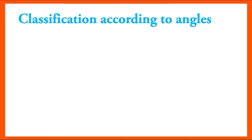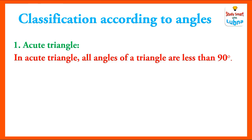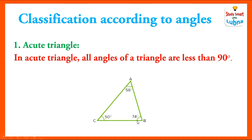Now classification of triangles according to their angles. Number one is acute triangle. In an acute triangle, all angles of a triangle are less than 90 degrees. Here the degree measure of angle A is 56°, angle B is 74°, and angle C is 50°. So all three angles are less than 90 degrees, and this type of triangle is called acute triangle.